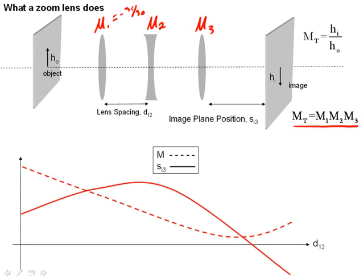Here on this graph, the dashed line represents the magnification and the solid line represents the image plane position following the third lens. With a positive lens, a negative lens, and a positive lens, this forms a zoom lens. This is what this might look like.